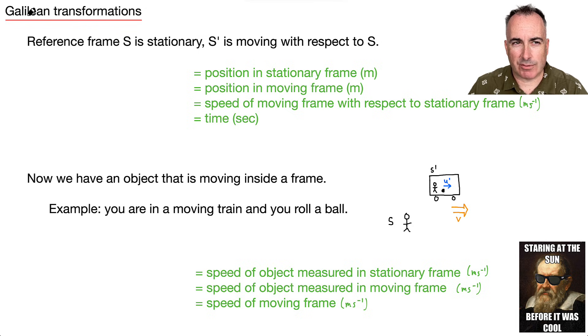For the Galilean transformations, there's a couple of equations here that we need to know from our data booklet. Just to remind you, if a reference frame S is stationary, and we have S primed, which is moving with respect to S, this is like your train that's moving. Well then one of the equations goes like this: X primed equals X minus VT.